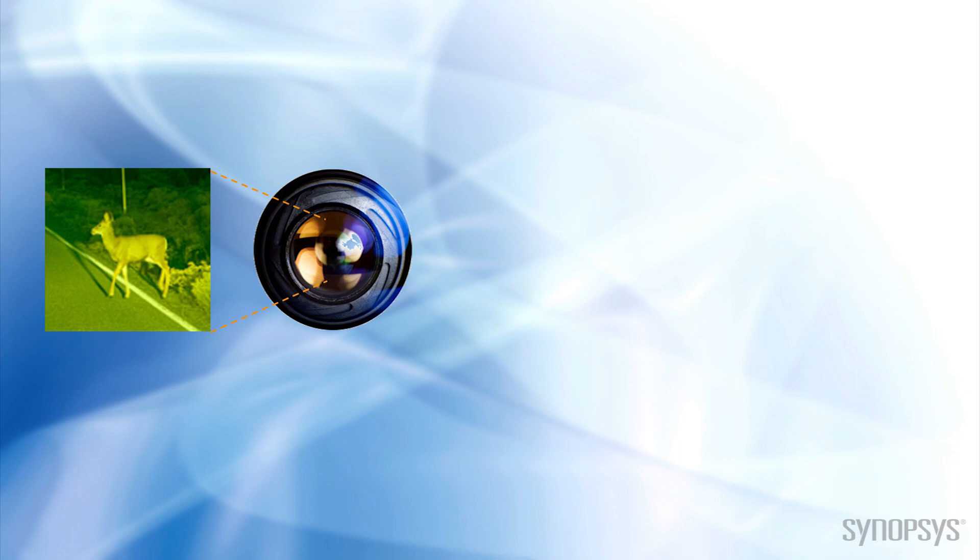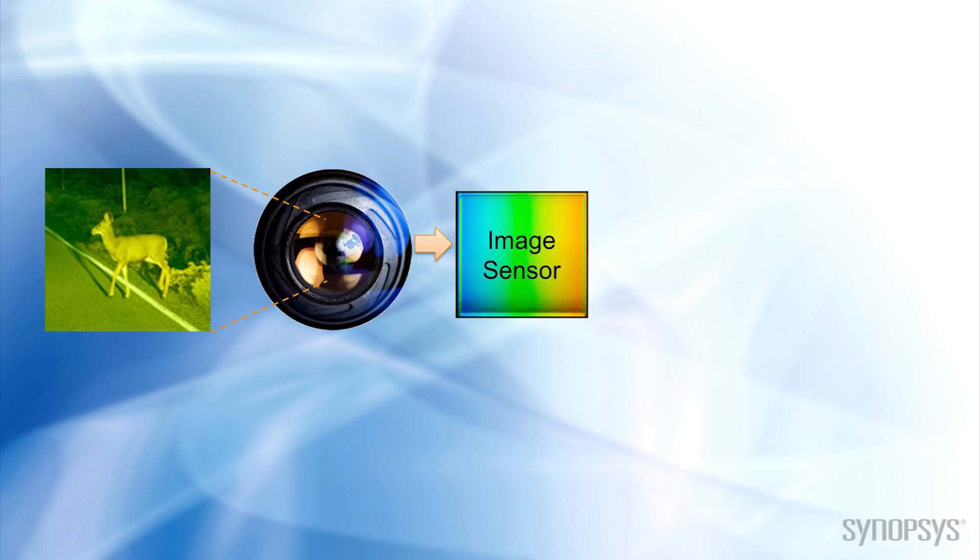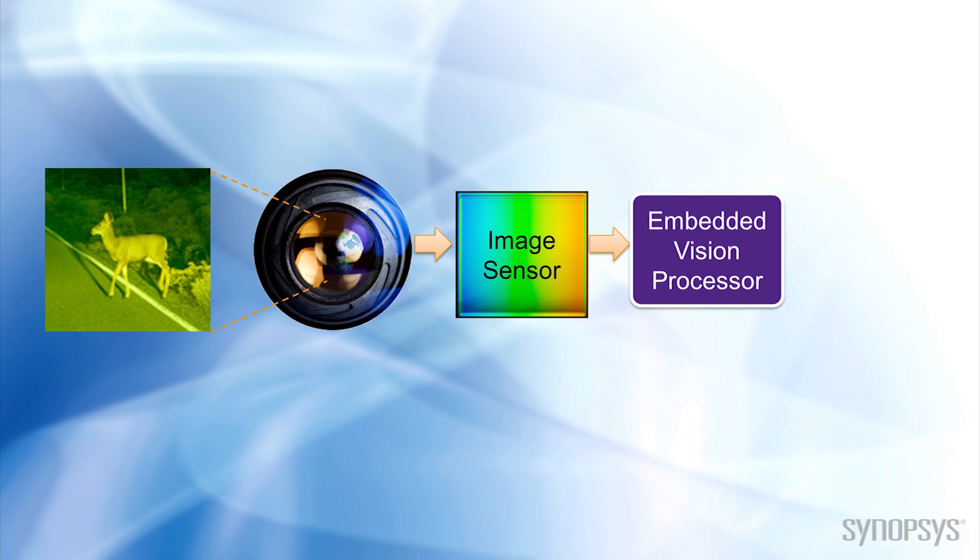In simple terms, if an image sensor gives a machine sight, Embedded Vision helps that machine understand what it is seeing in real time.